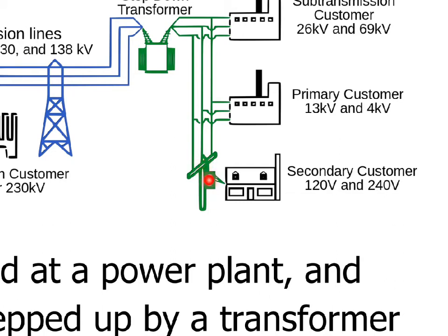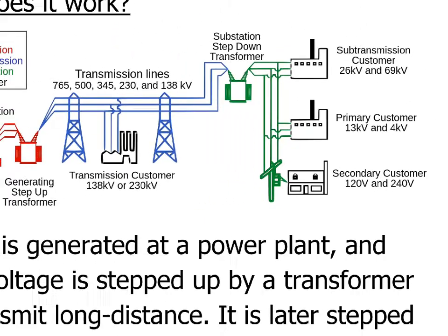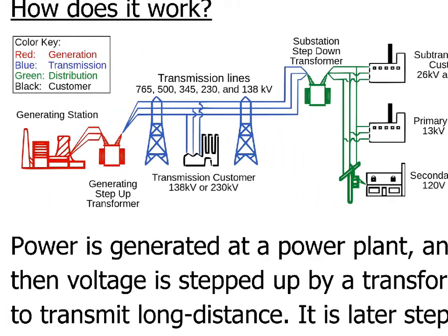It is a transformer, and it's the one that transforms the voltage down to whatever is used at your house — 220 volts in the Philippines, 110 in the U.S. So basically, you've got transformers changing the voltage at various points, and then power cables carrying the current between the power station where it's produced and the places where it's used.